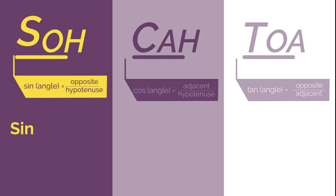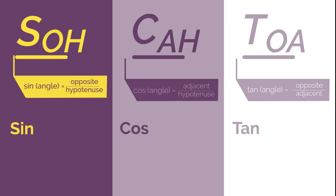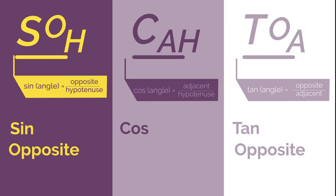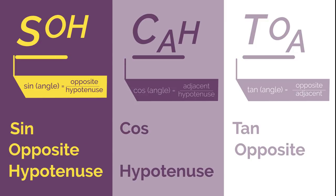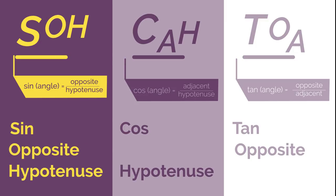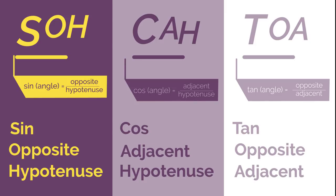S is for sine, C is for cos, T is for tan, the O's are for opposite, H is the hypotenuse, and A's are for adjacent. We will learn how to use SOHCAHTOA in the videos on finding missing sides and finding missing angles, but for now you just need to remember the word.